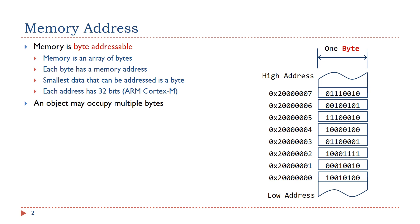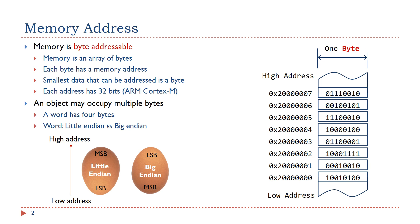A data object may take multiple bytes in memory. For example, a word occupies 4 bytes in memory. There are two different formats to store a word. When storing a word in Little Endian format, the most significant byte is stored at a high address, and the least significant byte is stored at a low address. On the other hand, when storing a word in Big Endian format, the most significant byte is stored at a low address, and the least significant byte is stored at a high address.